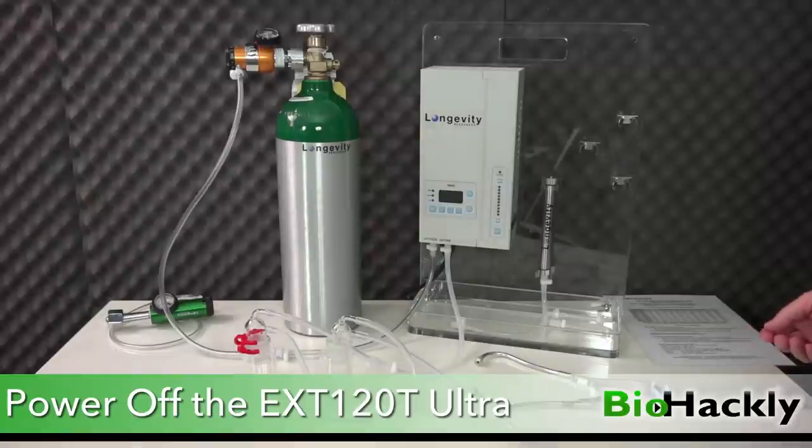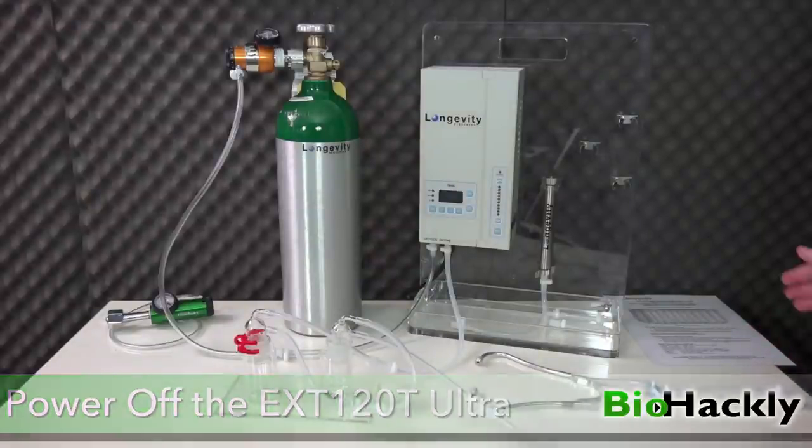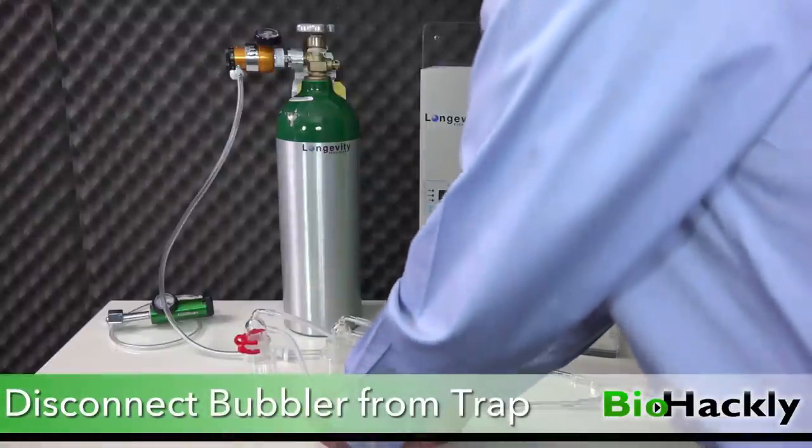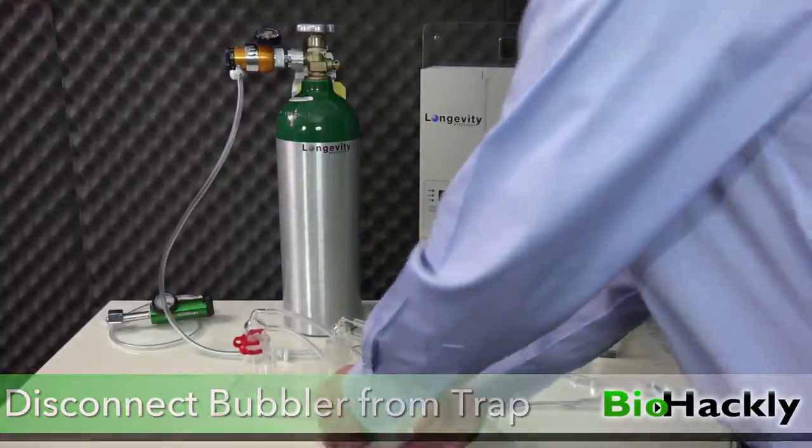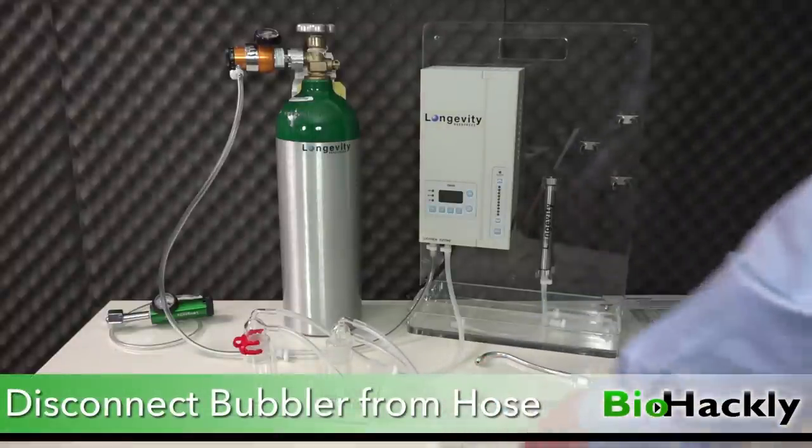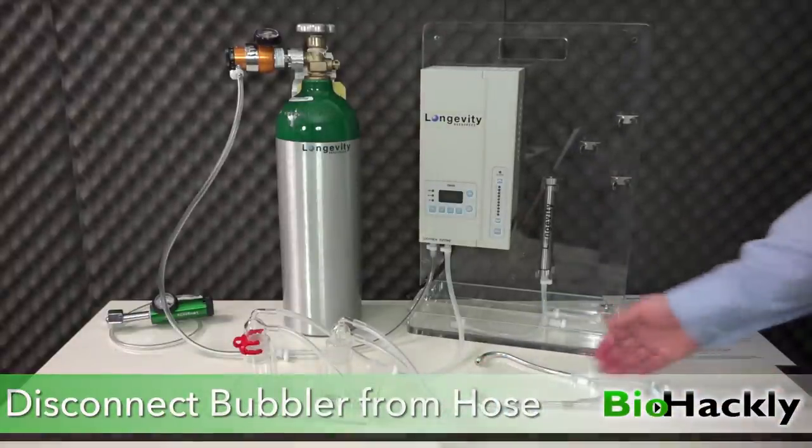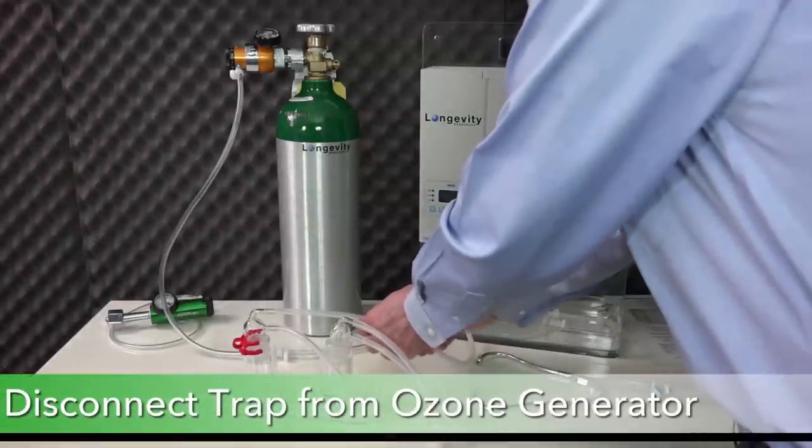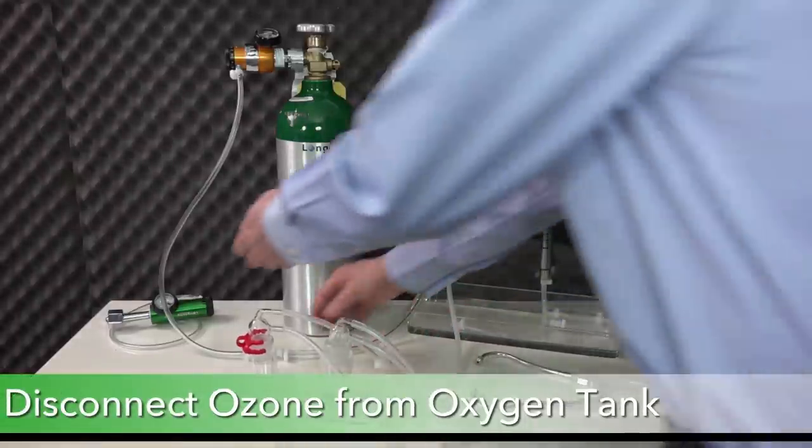There's also a protocol to disconnect everything properly. First, disconnect the bubbler from the trap, then disconnect the bubbler from the line going to the ear insufflation device. Finally, disconnect the trap from the ozone generator and disconnect the oxygen line from the ozone generator. That's it.